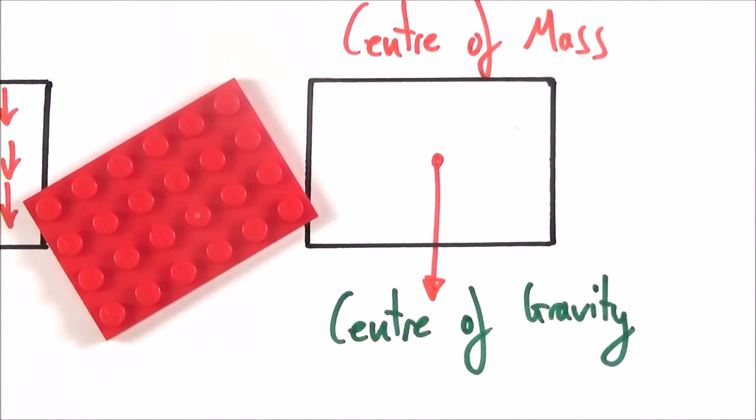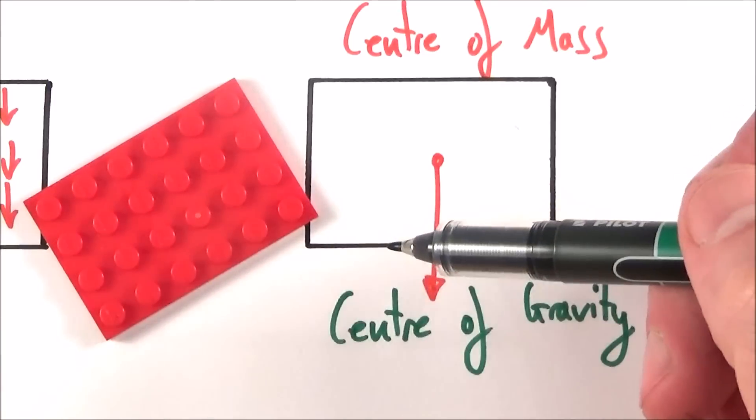It's only perhaps if you had an immensely tall tower that stretches out into space where the strength of gravity at the top and the strength of gravity at the bottom are different would we actually have the centre of mass being different to the centre of gravity.